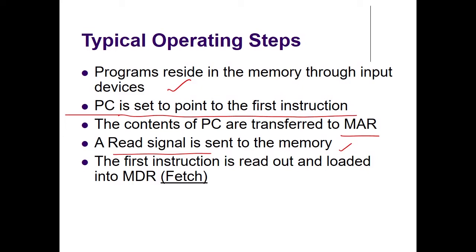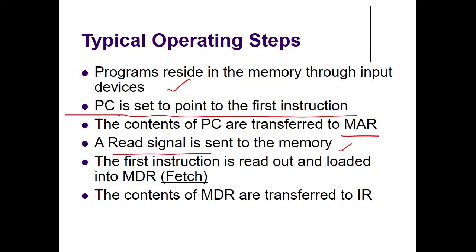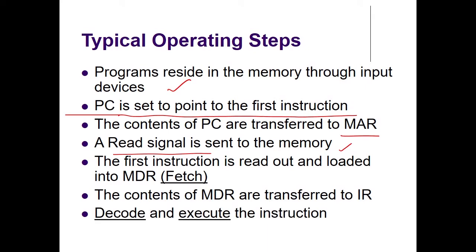Next, the first instruction is read out and loaded into the MDR — the memory data register. Then the contents of the MDR are transferred to another register called the IR, the instruction register. That instruction then needs to be decoded — so that is decode and execute the instruction.